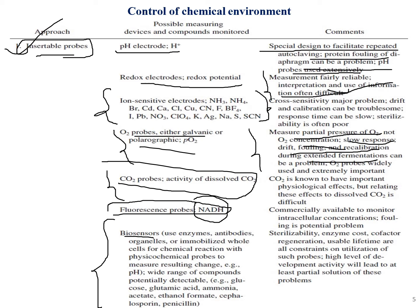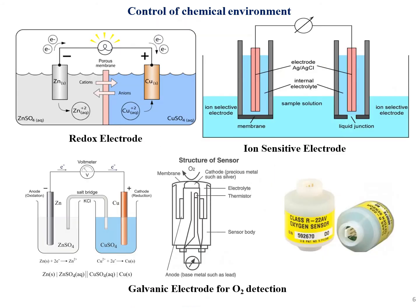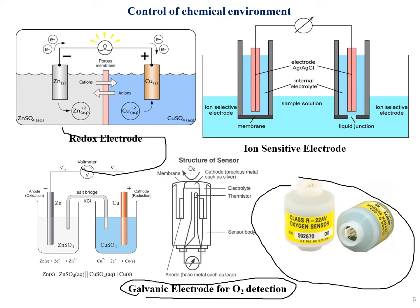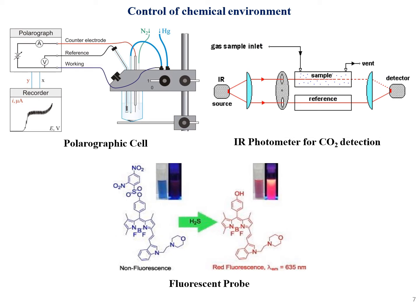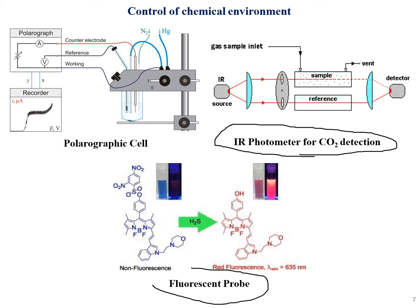Here we have diagrams showing redox electrodes, galvanic electrodes for CO2 detection, galvanic electrodes used for oxygen detection, ion-sensitive electrodes, photographic cells, and an IR photometer for CO2 detection. Fluorescence probes are used for detection of NADH and many other components.